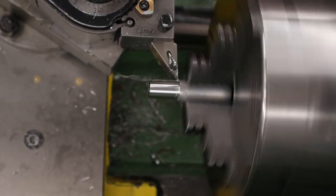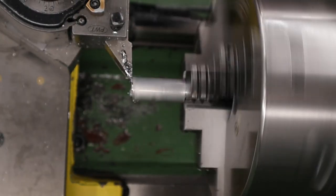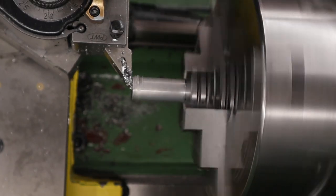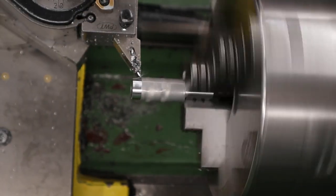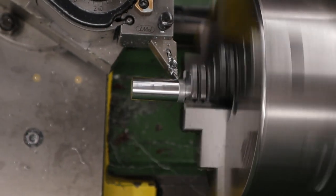Once we've got it turned down to diameter we can flip the piece in the chuck and start working on the trigger shoe itself. First thing to do is turn the OD so this is 16mm stock and we just need to turn it so it's round. I'm taking it down to 15.5mm.